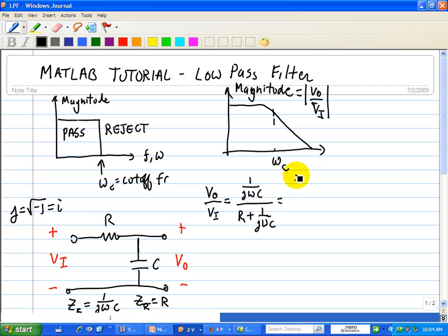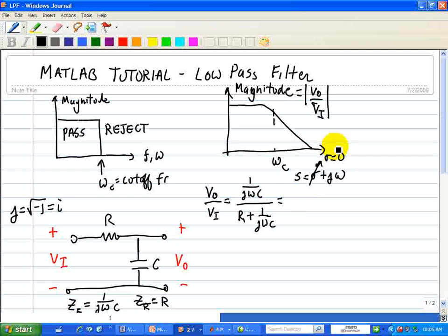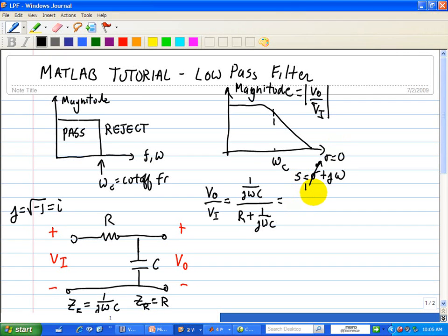If I replace S, S in essence is the real part plus imaginary part, where this real part is like the attenuation of a sinusoid. Omega is the input frequency associated with this complex number or signal. For a pure sinusoid, the real part is equal to 0, and hence we can say this is 1 over SC. That implies S is approximately equal to j omega. Then that's equal to 1 over RC, S plus 1 over RC.